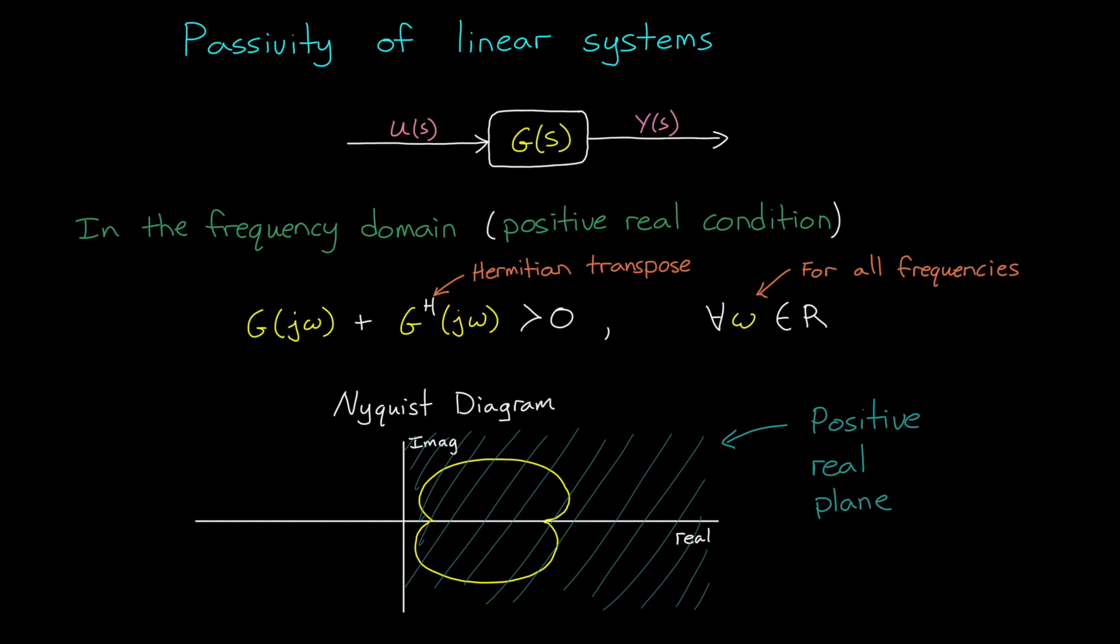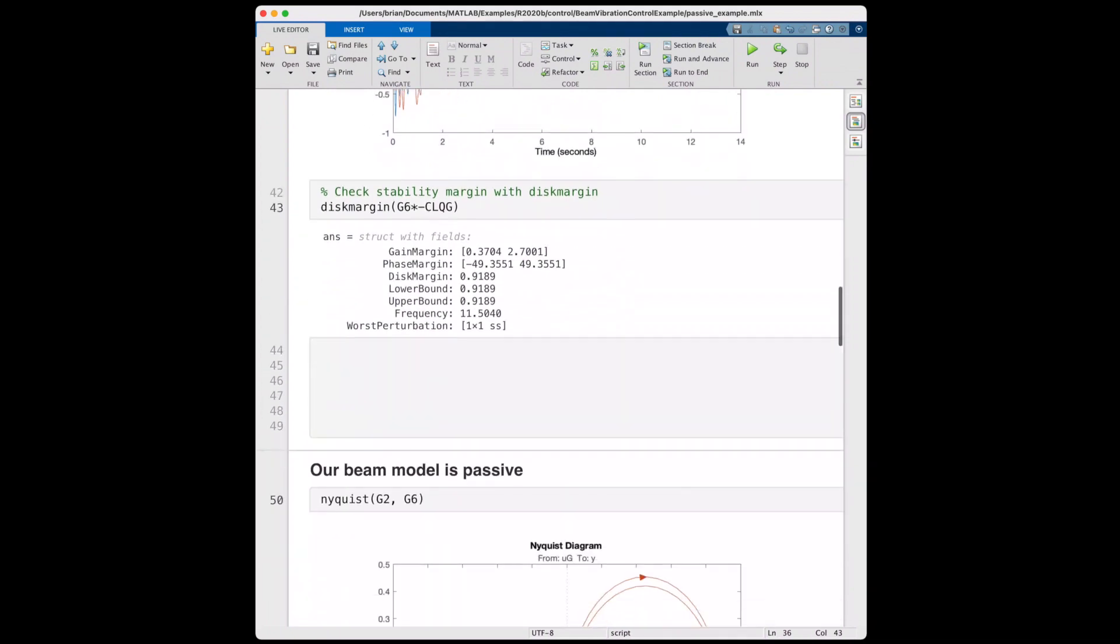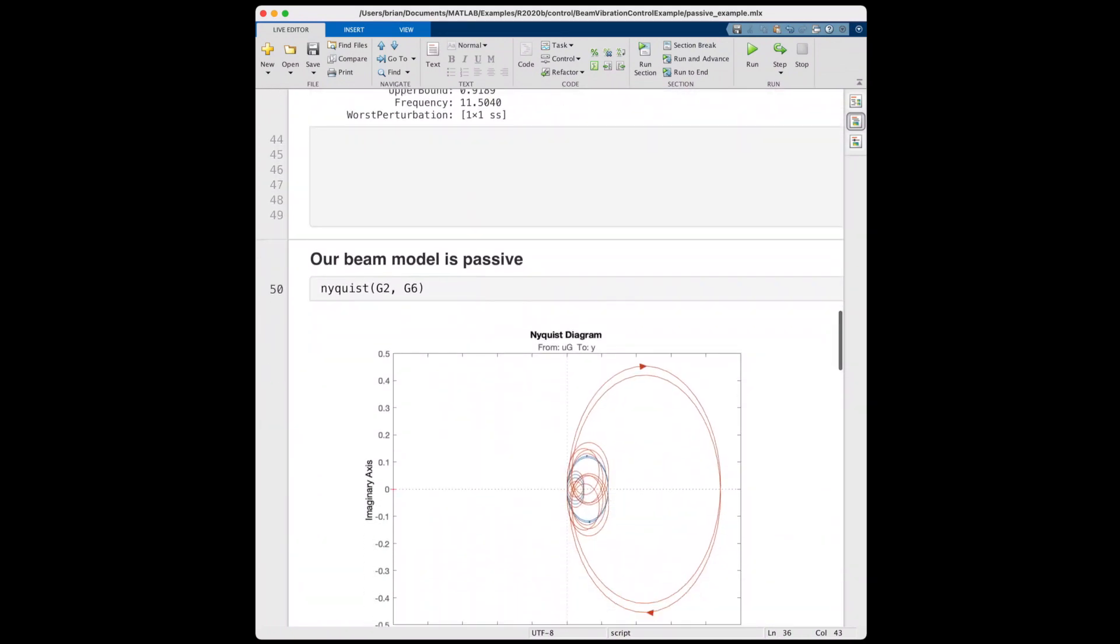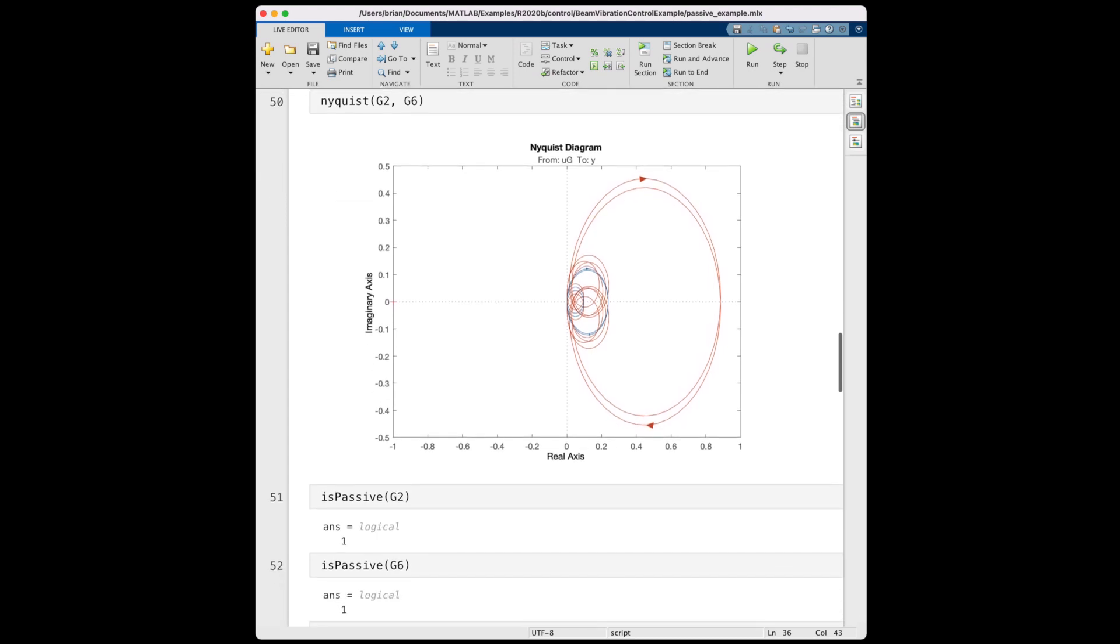For single input, single output systems, this is saying that the real component of g of j omega is greater than zero at all frequencies. Or another way of putting it, the entire Nyquist plot lies in the right half plane, the positive real plane. And so if you look at the Nyquist plot for a linear system, and it exists completely in the positive real plane, then that linear system is passive. And if we go back to MATLAB, we can see that our linear model of the flexible beam is passive by looking at the Nyquist plot. It's all in the right half plane.